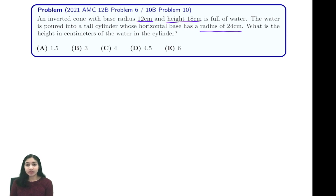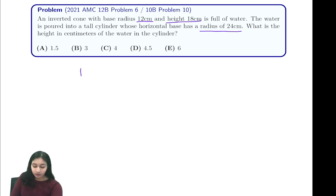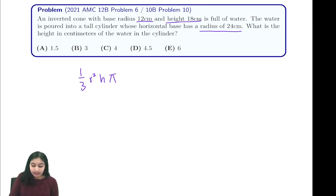We want to find the height in centimeters of the water in the cylinder. This problem is a pretty standard problem — all it requires is a little bit of computation. The first thing we want to do is apply the formula for the volume of a cone, which is one-third π r² h. In this case our radius is 12 and our height is 18, so we just plug those into our expression.